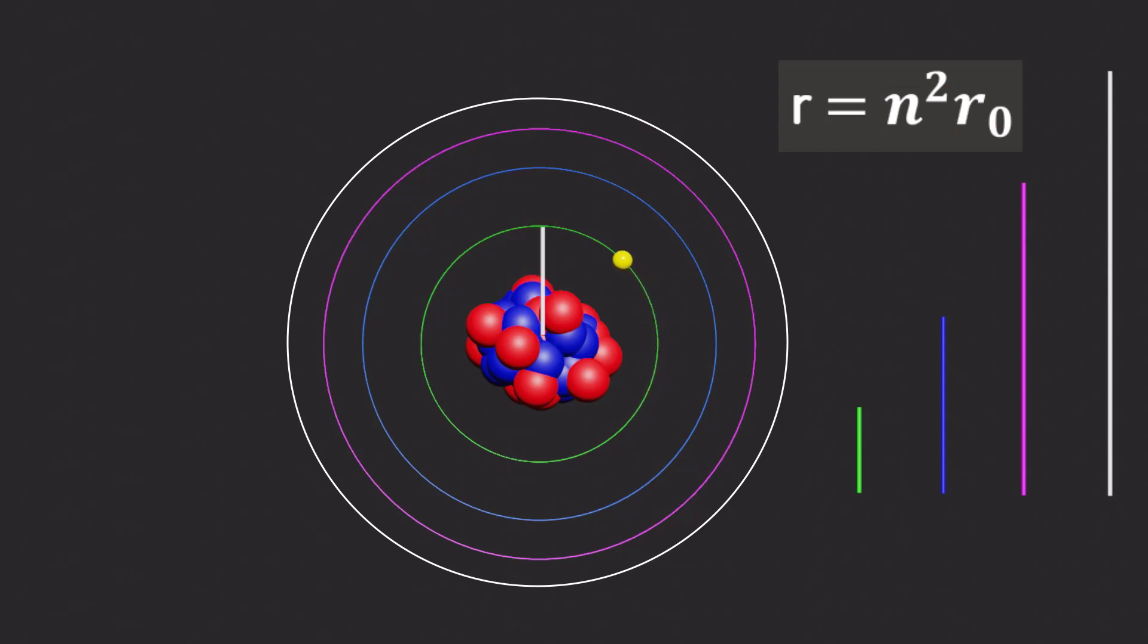This relationship shows that the radius of the second orbit is four times bigger than the first one, and the third and fourth orbits are nine and sixteen times bigger, respectively.